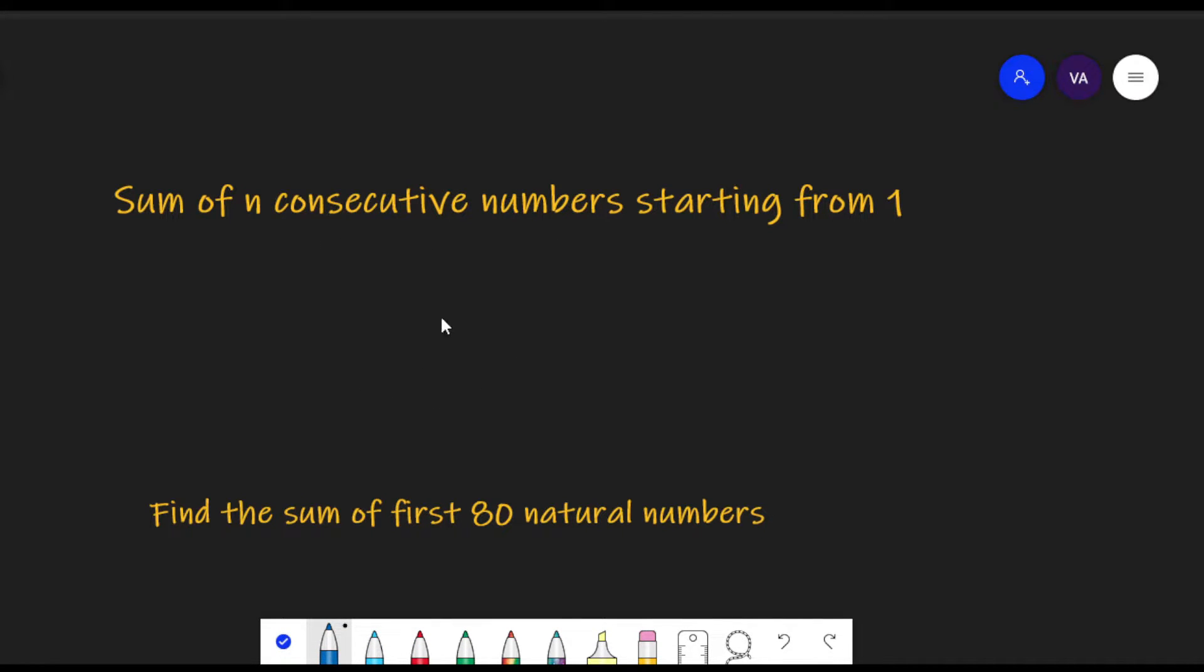So here we can convert this logic into a formula. Sum of n consecutive natural numbers starting from 1. If there are n numbers, there will be n by 2 pairs. And each pair will have n plus 1 as the sum. So here we have a formula. We can rewrite it as n into n plus 1 divided by 2.